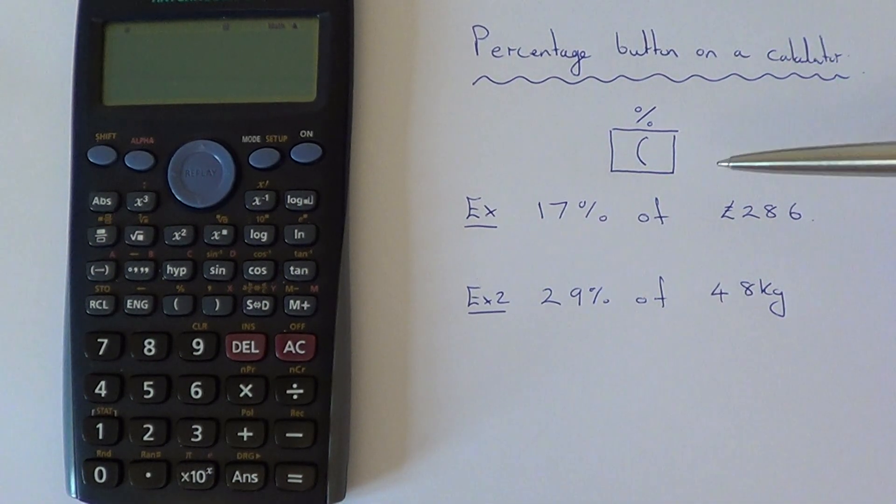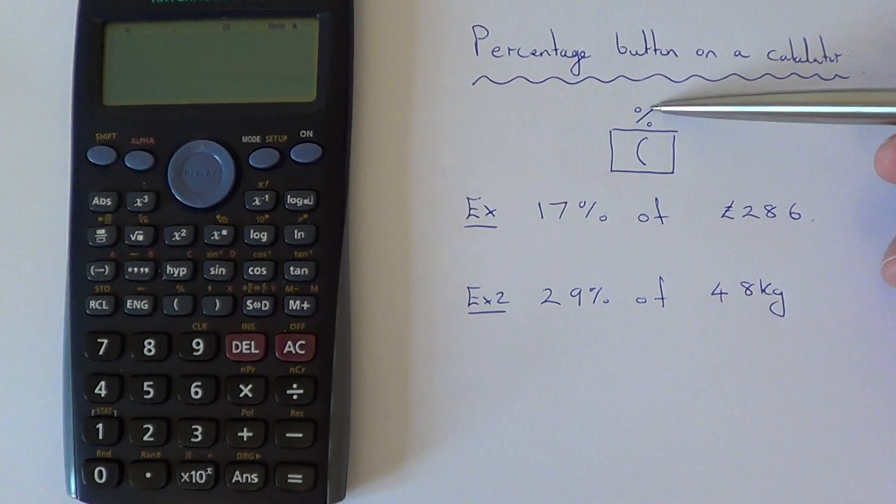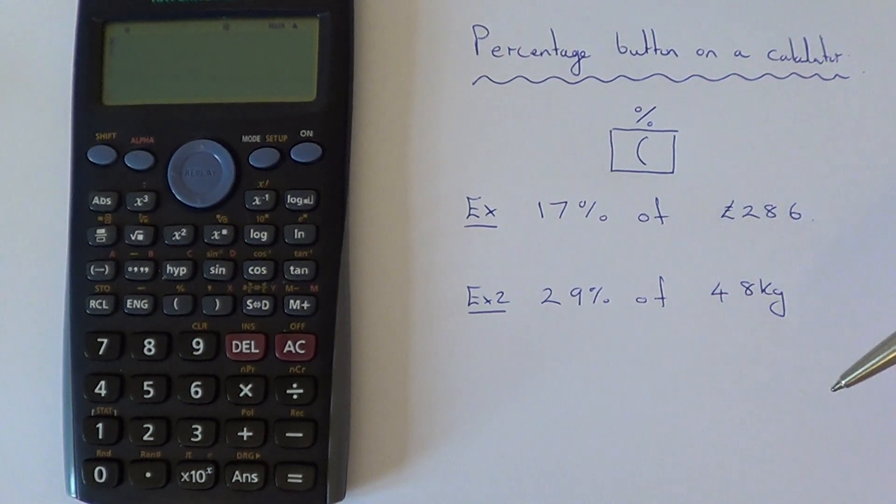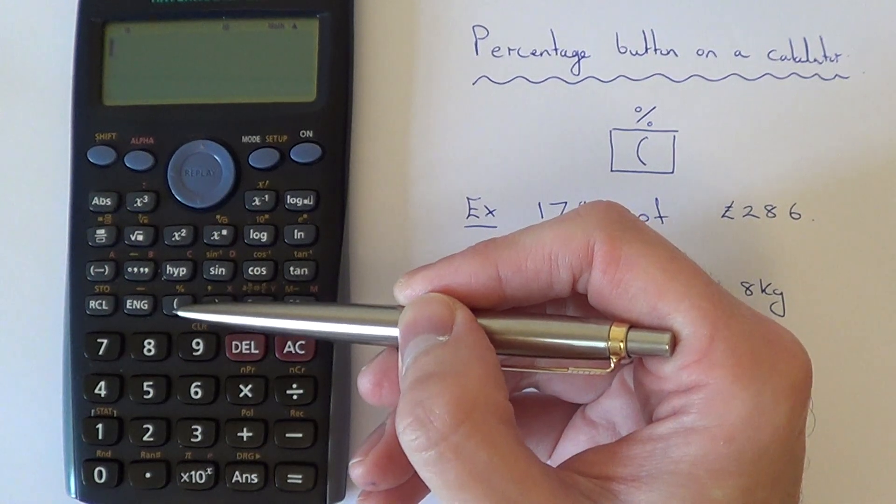On a Casio calculator, the button you'll be looking for is the bracket key, and the percent key is the second function on the left bracket key. You'll find this key here on your calculator.